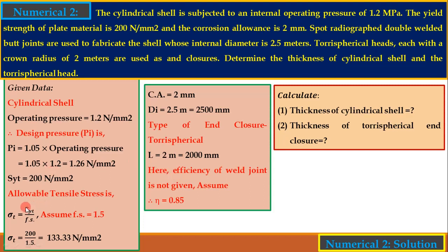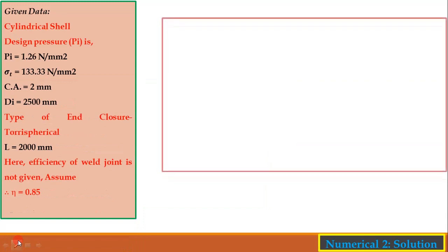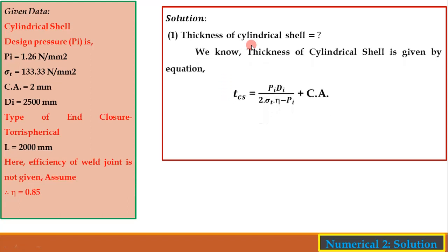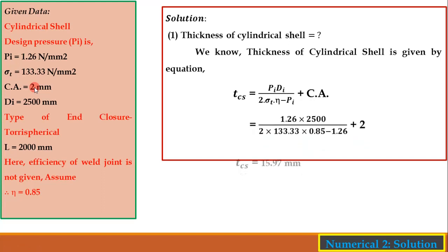Solution, Part 1 — Thickness of cylindrical shell using t_cs = (pi × di) / (2 × sigma_t × eta − pi) + CA. Substituting pi = 1.26 N/mm², di = 2500 mm, sigma_t = 133.33 N/mm², eta = 0.85, CA = 2 mm — the thickness of the cylindrical shell is 15.97 mm.